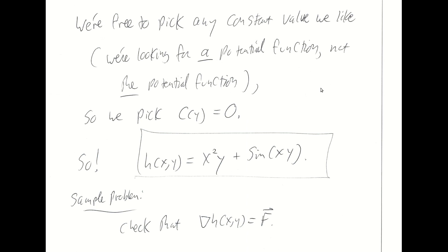So I'm free to pick what constant value I would like c(y) to be. I'm looking for a potential function, not the potential function. There are actually infinitely many potential functions, just like there are infinitely many anti-derivatives for any given function. I'm going to be a lazy person and let c(y) be zero, because that simplifies my expression. So c(y) is any constant — we can pick it to be zero. That means h(x,y) has a specific closed-form expression. We have found a potential function for big F. Check that its gradient is big F.